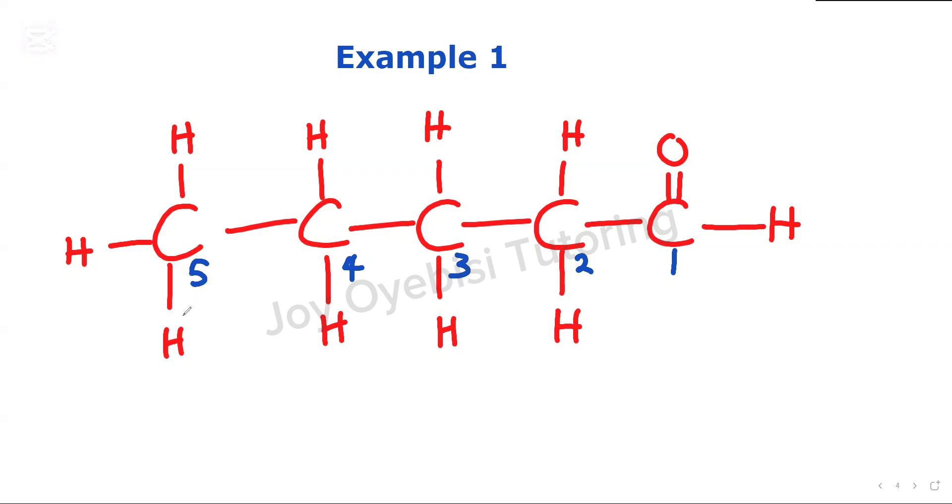So since we have five carbon chain, five carbons in organic chemistry is pent. And since you're naming an aldehyde, you're going to name it as if you're naming an alkane. So complete this as if it's pentane, but then we change this E to AL, and that is it. So the name of this compound is pentanal.